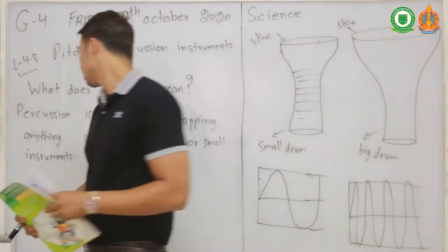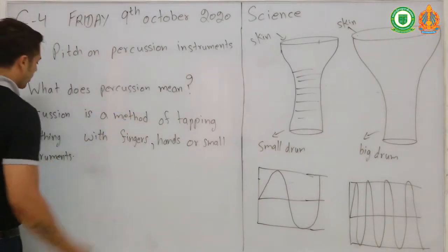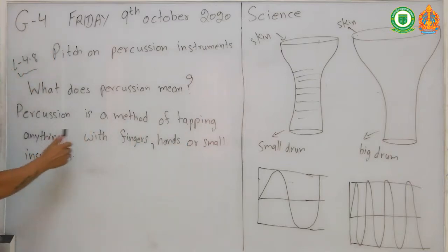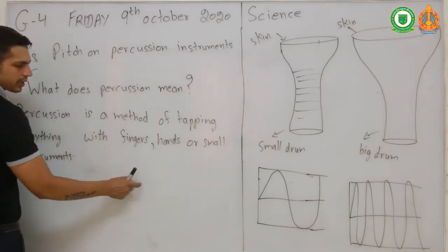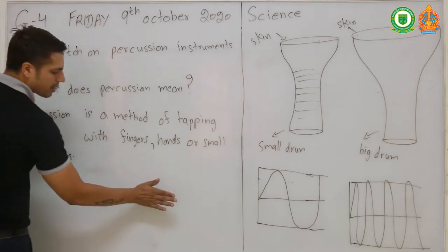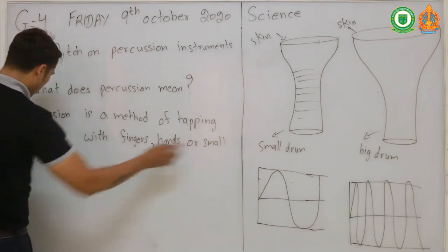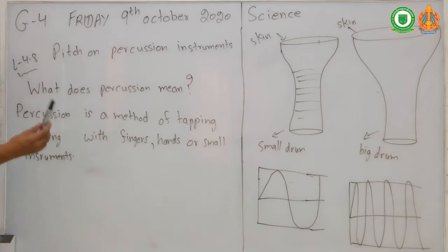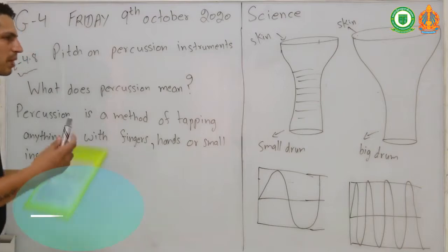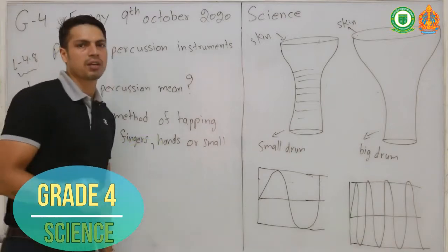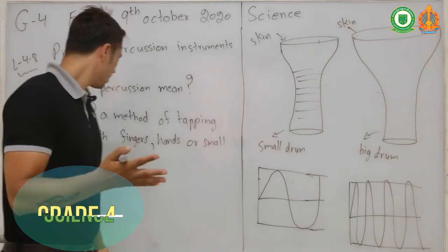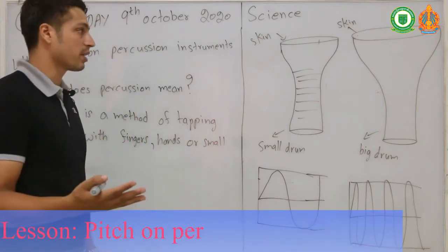So what does 'percussion' mean? Percussion is a method of tapping anything with fingers, hands, or a small instrument. You can tap like this with your fingers, or with your whole hand, or with a small instrument.